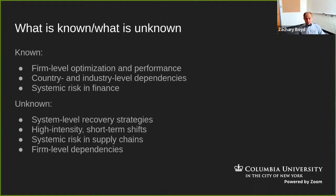Much has already been known about global supply chains before the pandemic, but the problem is that existing knowledge is not well adapted to this kind of situation. For example, firms in recent years have made fabulous gains in predicting short-term demand fluctuations and optimizing for cost. On the macro level, economists and complexity scientists have mapped out and traced shock propagation through the network dependencies between countries and industries. And following the 2008 financial crisis, notions of systemic risk in finance have been very well developed. What is less understood — and what's needed for COVID — is an understanding of how supply chains can recover as a system after heavy disruption.